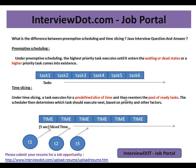Under time slicing, a task executes for a predefined slice of time — say five seconds — and then re-enters the pool of ready tasks. The scheduler then determines which task should execute next based on priority and other factors. For example, task T1 enters the first time slice; for five seconds it will be executed.